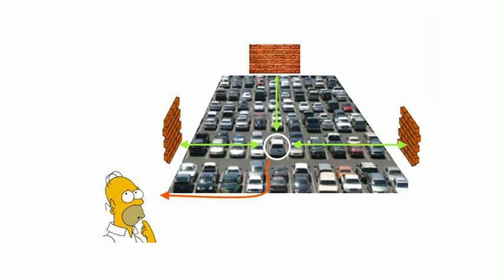So back to Homer. He's probably remembering where his car was in terms of the distances and directions to extended buildings and boundaries around the location where he parked, and that would be represented by the firing of boundary-detecting cells.